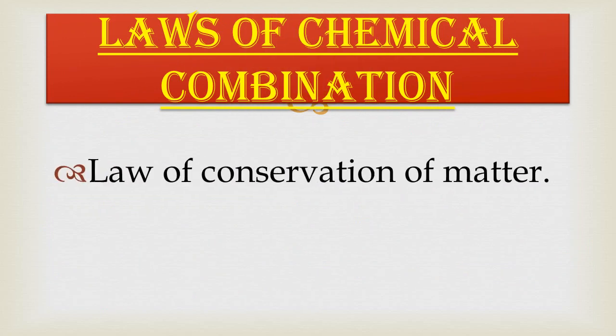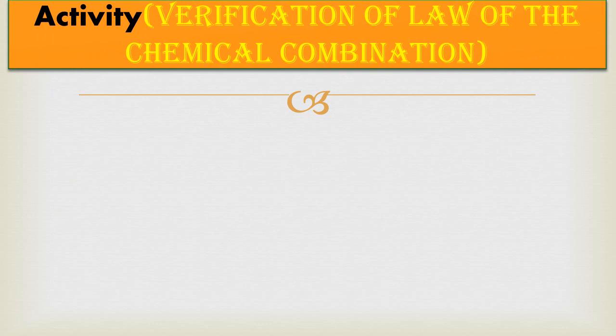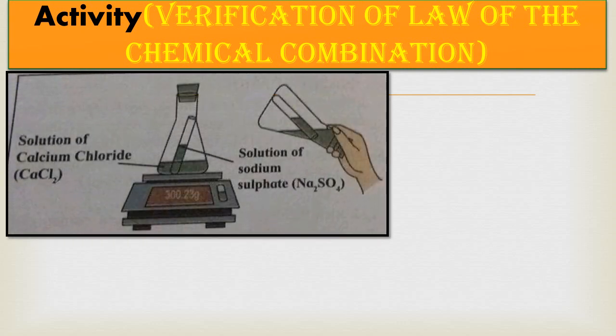There are two laws of chemical combination: first, the Law of Conservation of Matter, and second, the Law of Constant Proportion. Let's study them one by one. First, we perform a small activity from our textbook to verify the first law. Take a solution of calcium chloride (CaCl₂) in a conical flask — indicated by the red arrow — and a solution of sodium sulfate (Na₂SO₄) in a test tube.